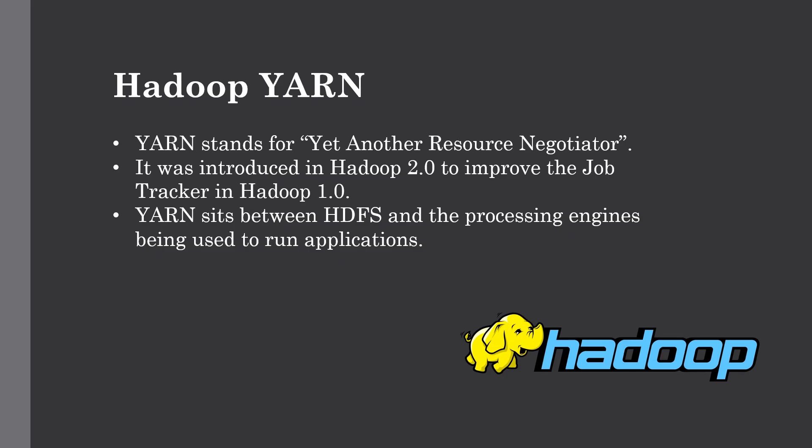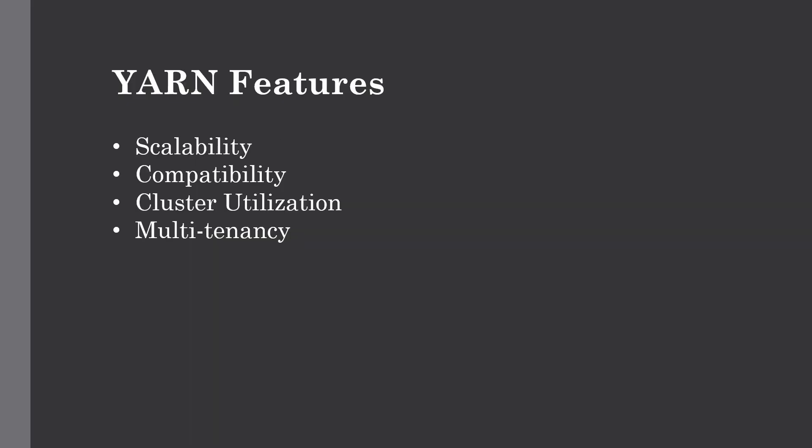Before discussing how YARN works and its core components, let's discuss some basic features. The first is scalability — the scheduler of YARN allows us to extend and manage thousands of nodes and clusters, adding commodity hardware to process data in parallel. The second is compatibility — YARN supports existing MapReduce applications without any issues, making it compatible with Hadoop version 1 as well. Third is cluster utilization — YARN supports dynamic utilization, optimizing cluster usage. Fourth is multi-tenancy — YARN allows multiple engines access, giving every organization the benefit of multi-tenancy.